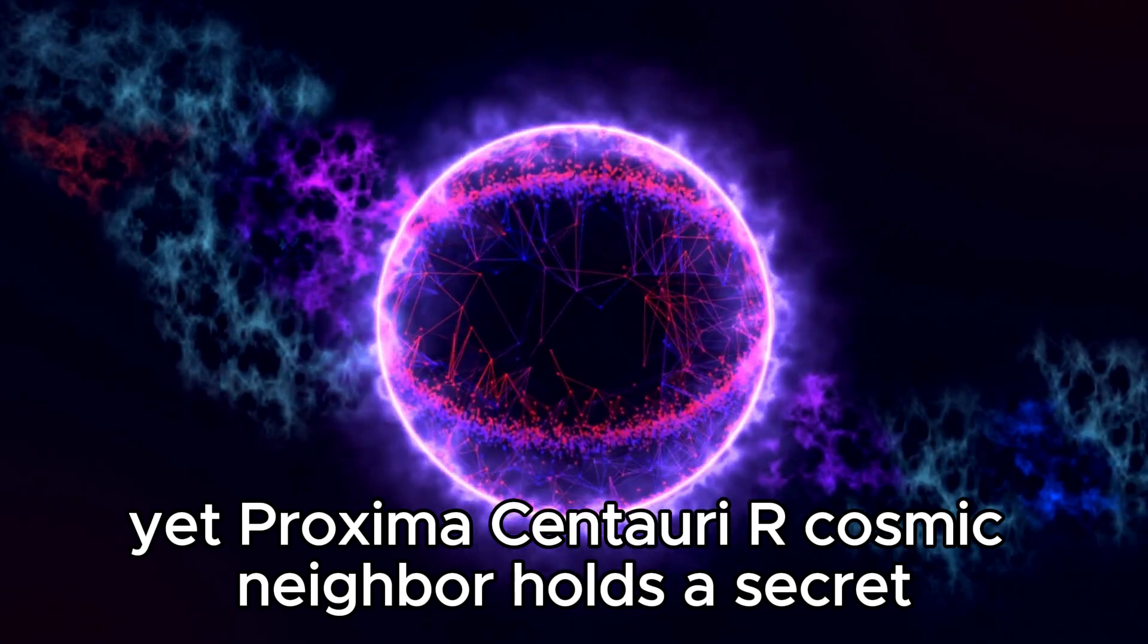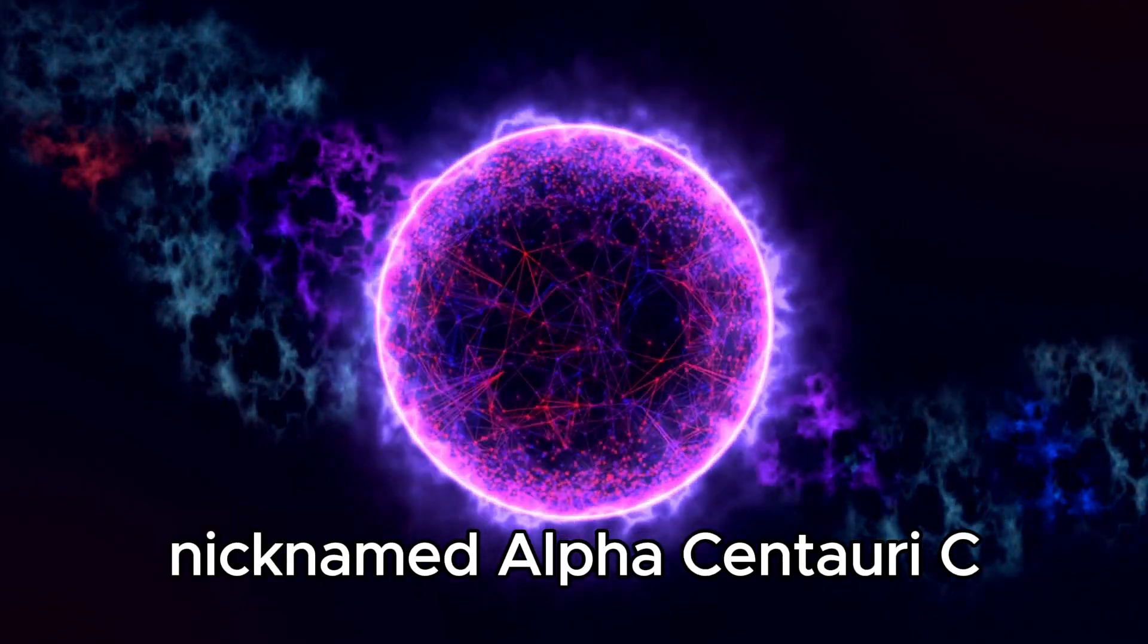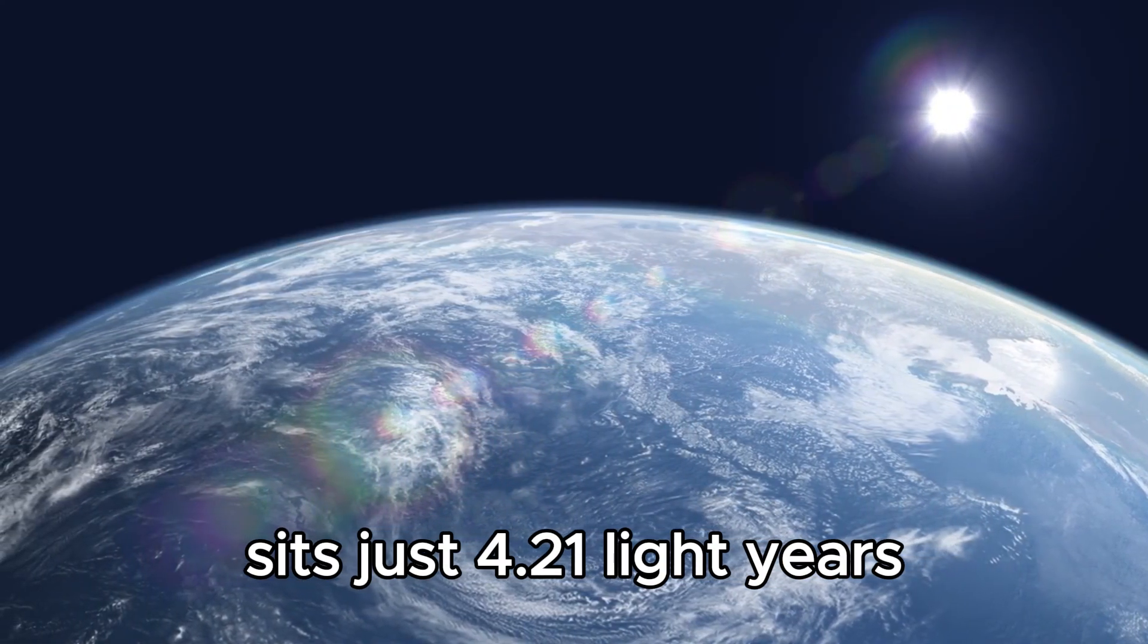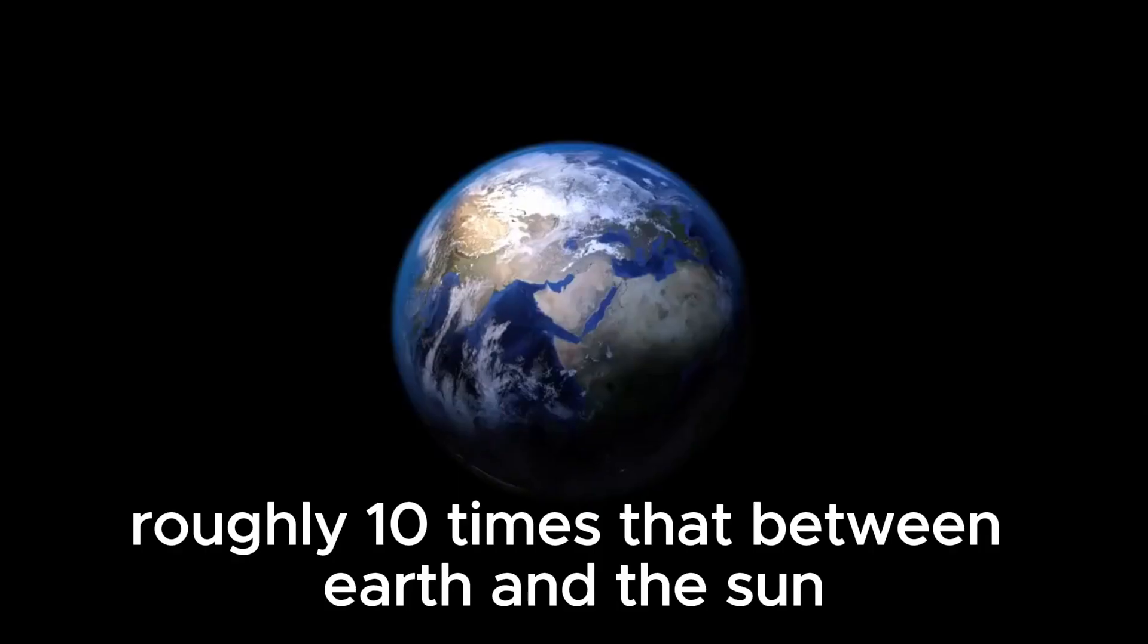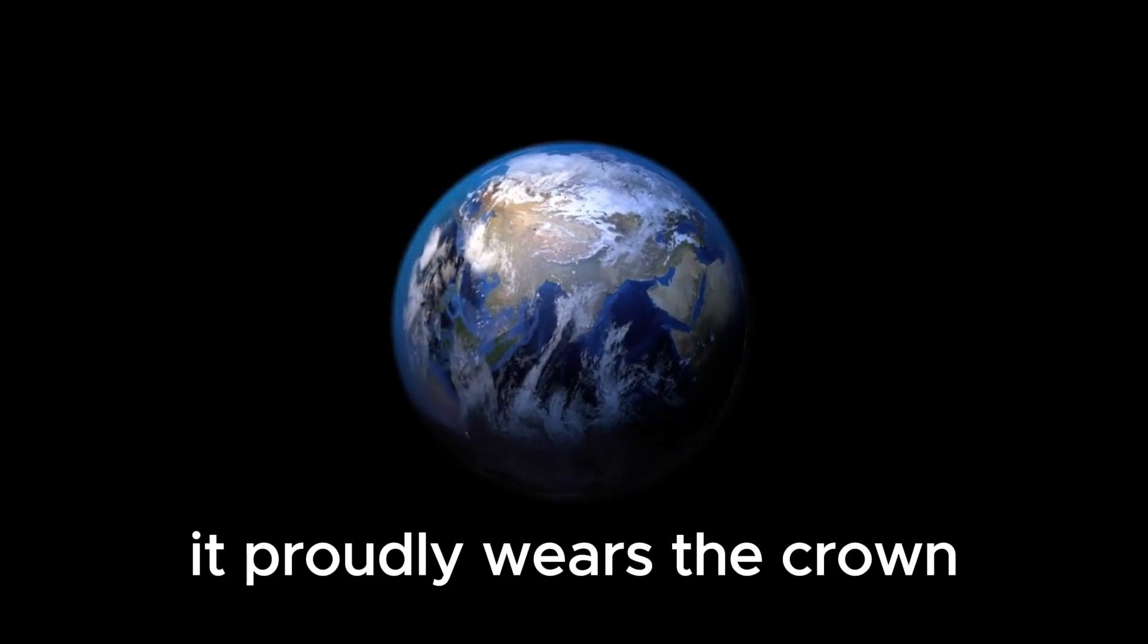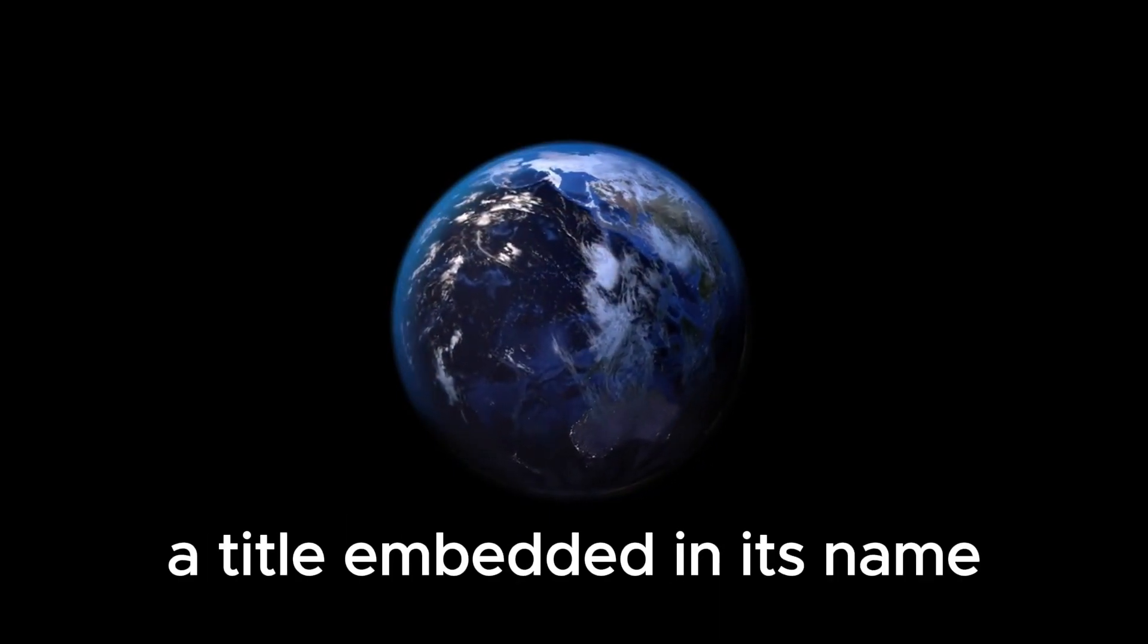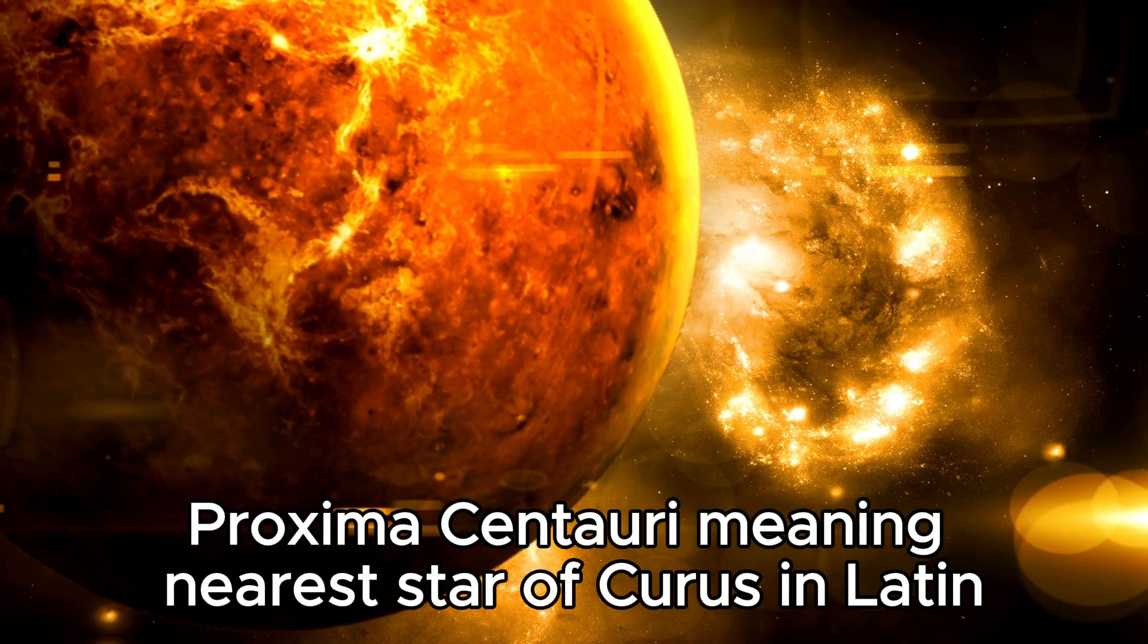Yet Proxima Centauri, our cosmic neighbor, holds a secret, nicknamed Alpha Centauri c. This red dwarf or M-type star sits just 4.21 light-years from its brighter companions, a distance roughly 10 times that between Earth and the Sun. It proudly wears the crown as the closest star to our planetary system, a title embedded in its name: Proxima Centauri, meaning nearest star of Centaurus in Latin.